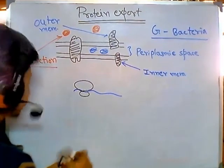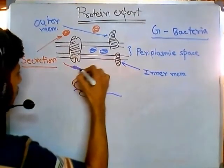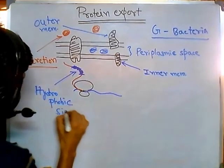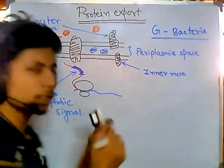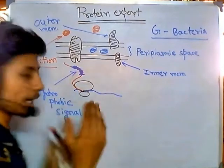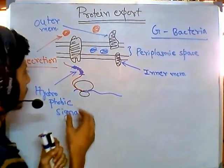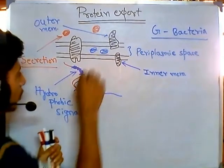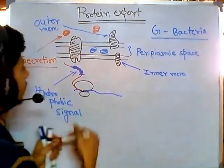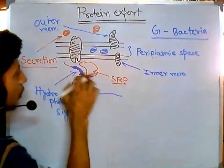As the ribosome sits on the mRNA and begins translation, producing the protein chain, there is a signal region within the early part of that protein chain which is simply hydrophobic — a stretch of about 12 to 25 amino acids of hydrophobic sequence. This hydrophobic signal is very important. Once it appears, it triggers another protein called the Signal Recognition Particle, or SRP, which comes and binds with this signal.